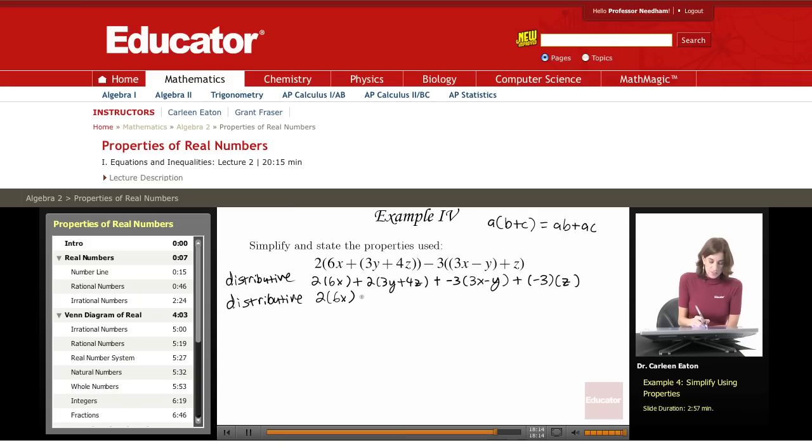So this gives me 2 times 3y plus 2 times 4z plus negative 3 times 3x plus negative 3 times negative y.